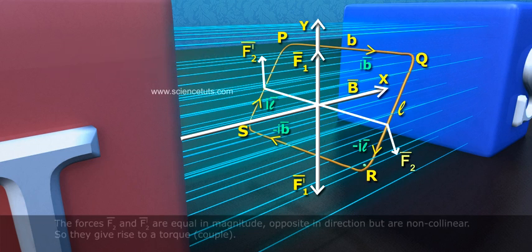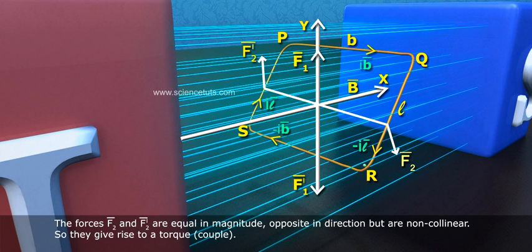The forces F2 bar and F2 dash bar are equal in magnitude, opposite in direction, but non-collinear, so they give rise to a torque couple.